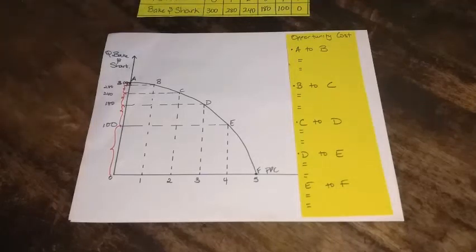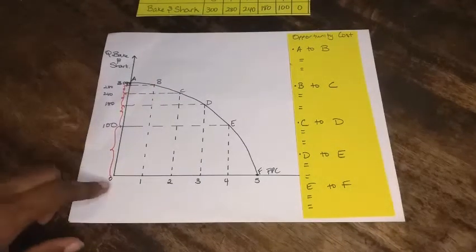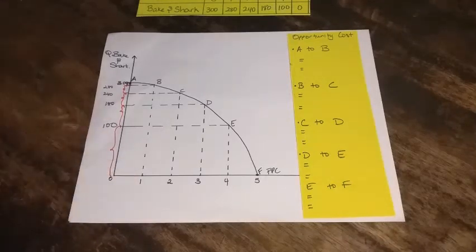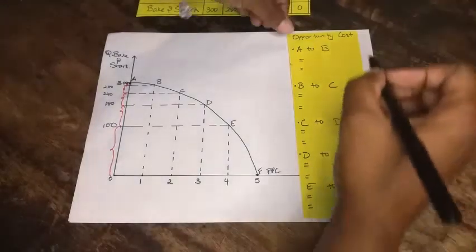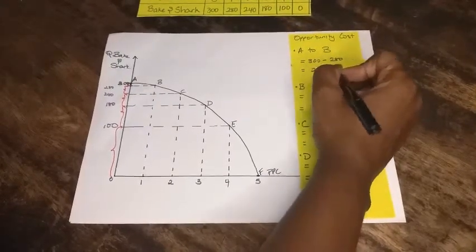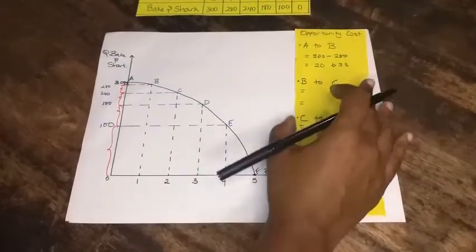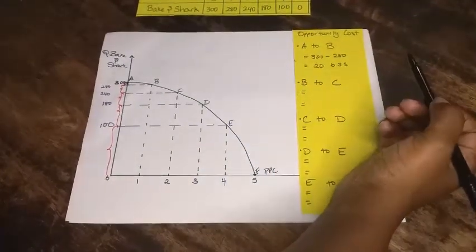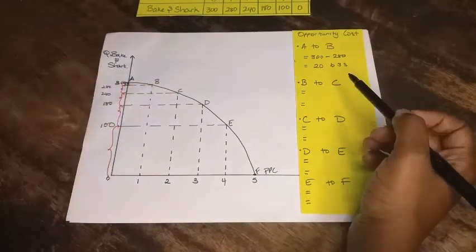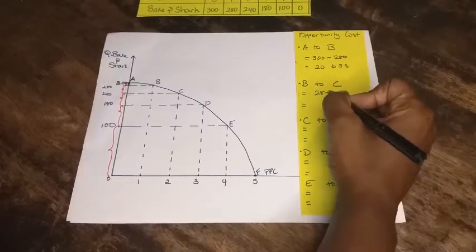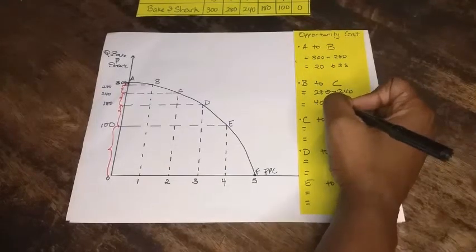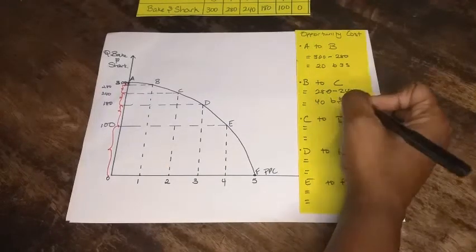As we move from point A to B, we're moving from zero to one unit of t-shirts, and we look to see how much bacon shark we have to give up: 300 take away 280 gives us 20 bacon shark. As we move from point B to point C, we give up 280 take away 240, which gives us 40 bacon shark.